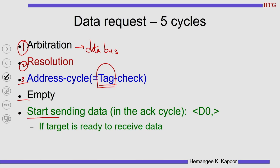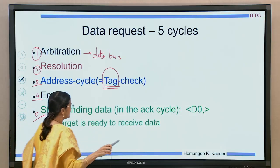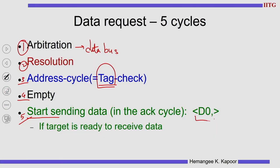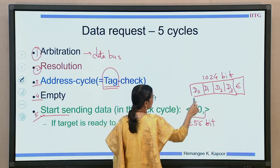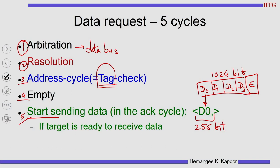In the fifth cycle, we actually start sending data. The first 256 bits of your block — we had a block of 1024 bits to be sent in four pieces: D0, D1, D2, D3. The first chunk of 256 bits is sent in the fifth cycle of the data request. We also need one empty cycle as a turnaround time.